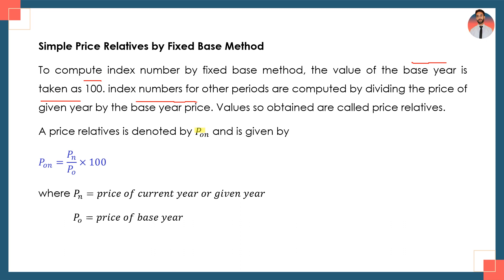Price relatives is denoted by P₀ₙ. The formula is: P₀ₙ = Pₙ / P₀ × 100, where Pₙ is the price of the given year (current year) and P₀ is the price of the base year. Toh dono ki jo ratio hai — current year price ki aur base year price ki — let is called price relatives using fixed-base method.